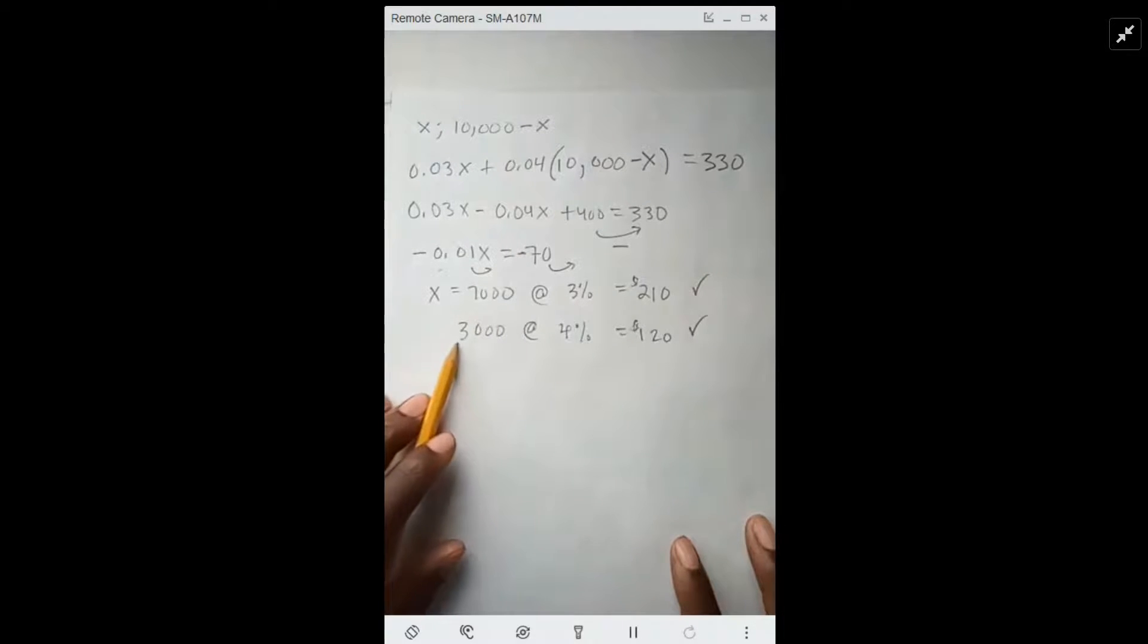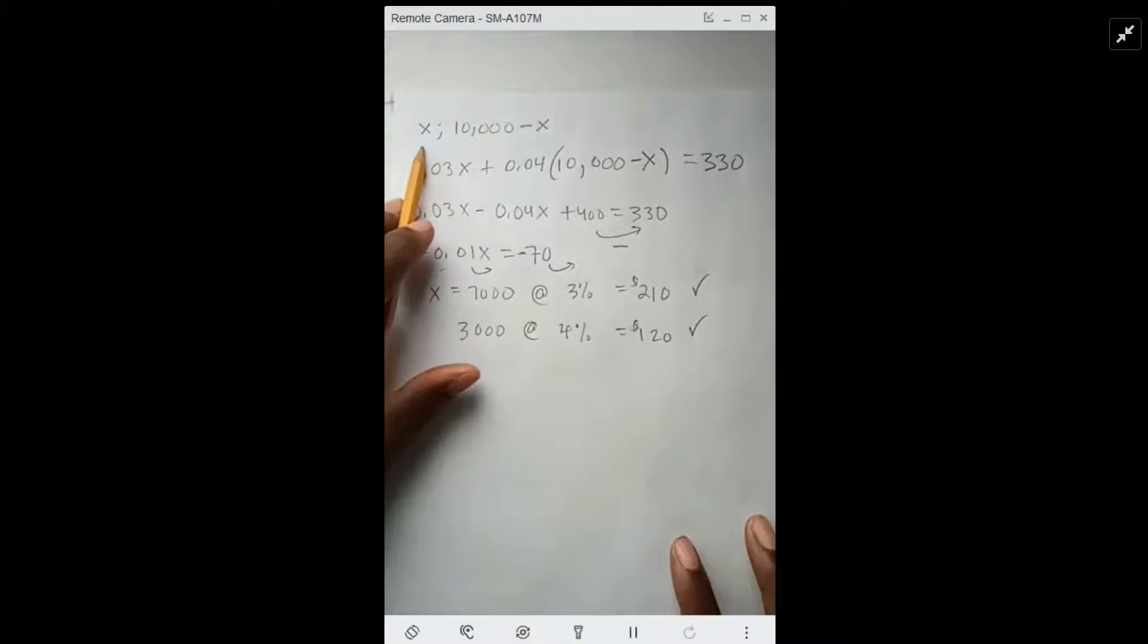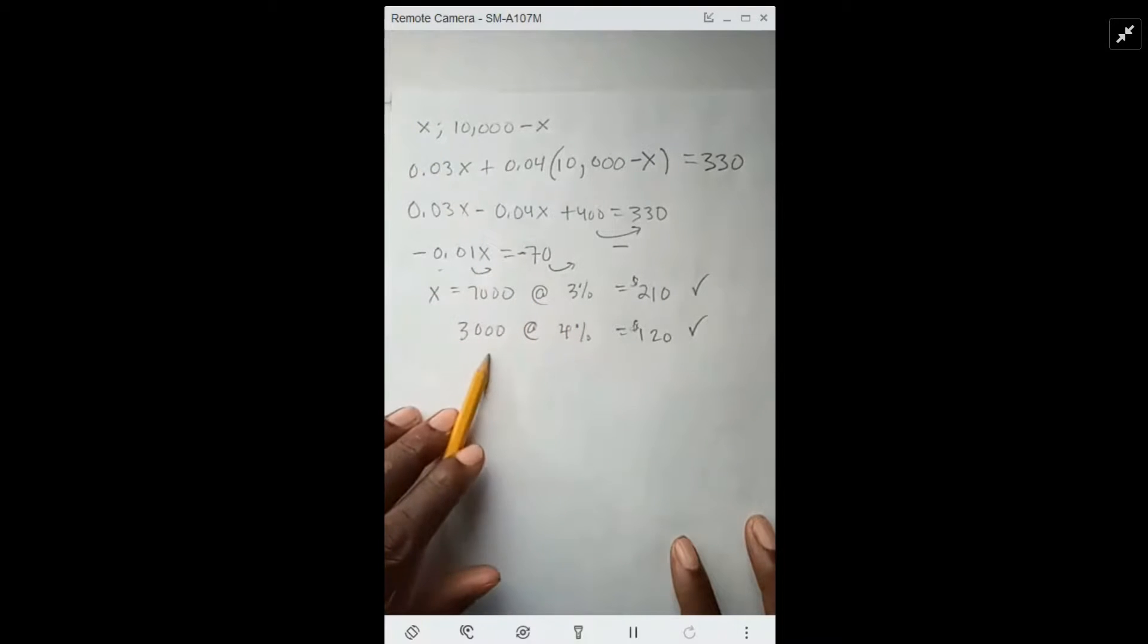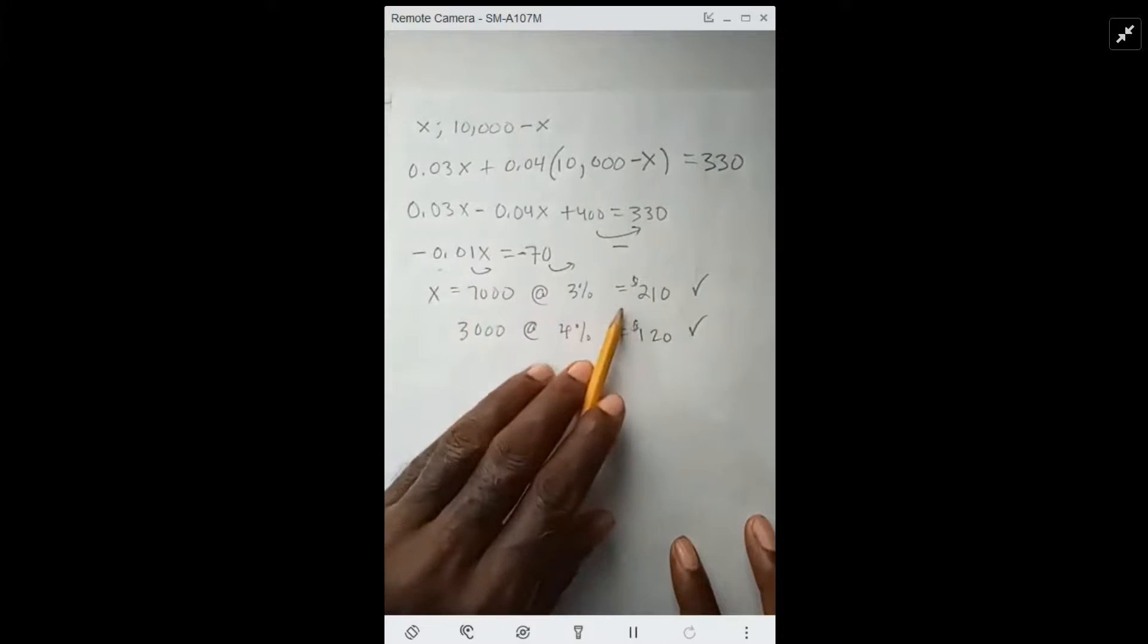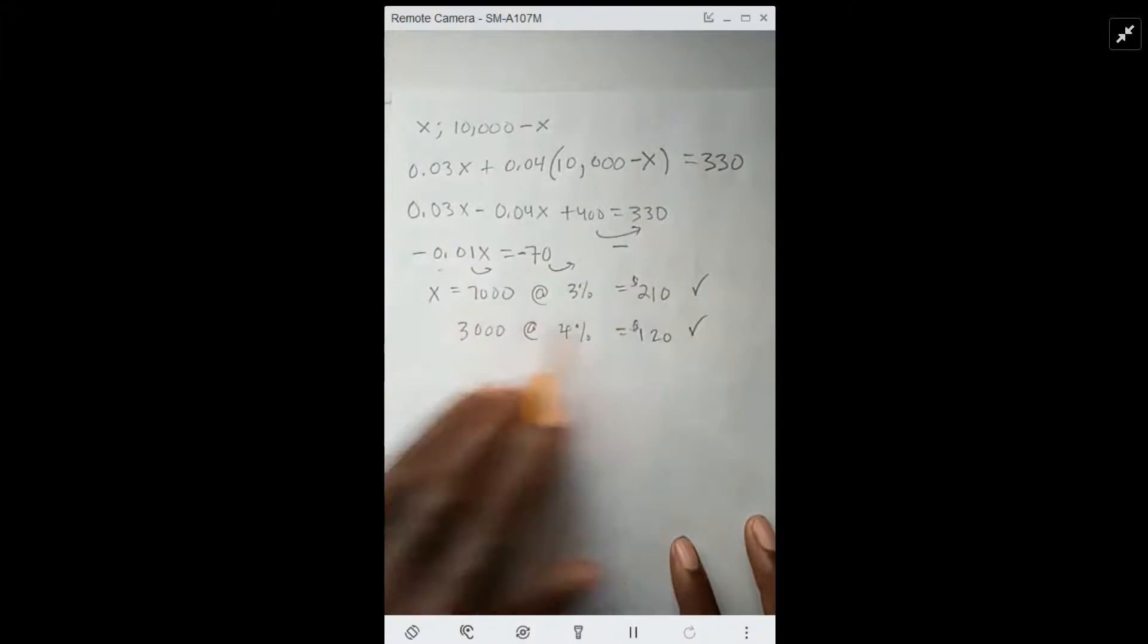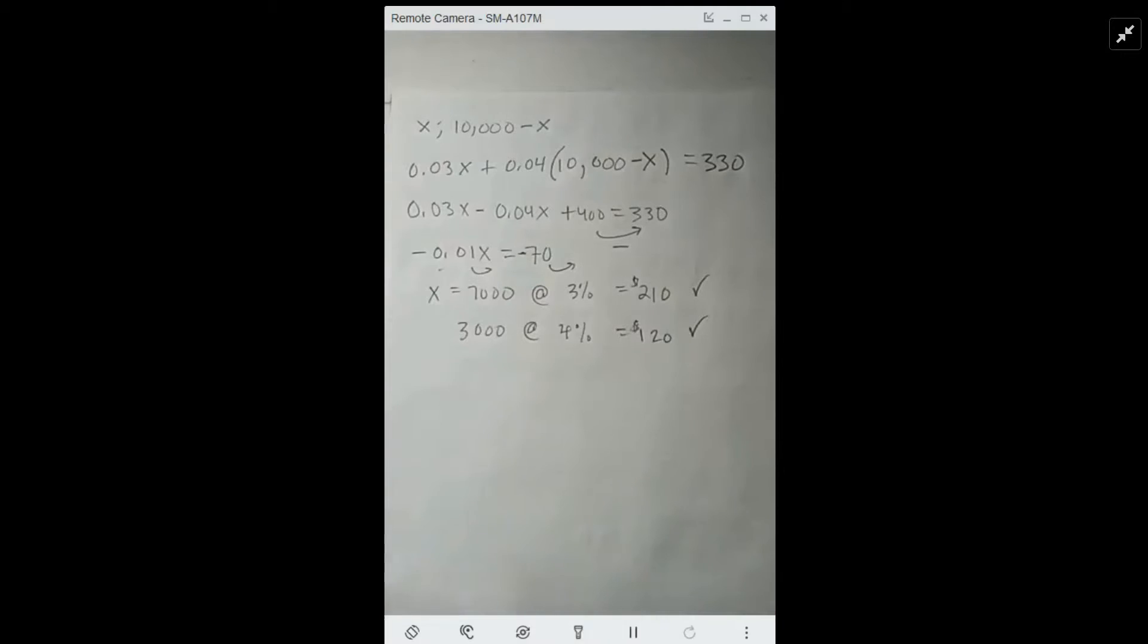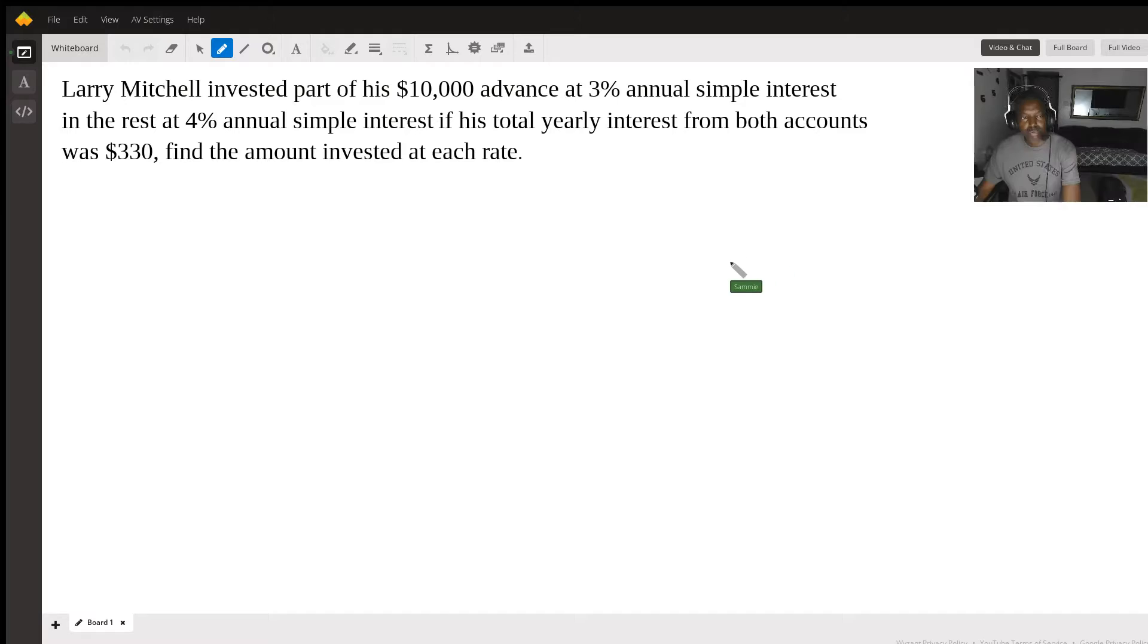And what's left over from 10,000 is going to be 3,000. So x, our first value, was invested at 3%, and the second value was invested at 4%. If you get these mixed up, all you have to do is multiply them out and you'll find that 0.03 times 7,000 gives you 210, and 0.04 times 3,000 gives you 120. That's your solution for the problem. Thank you very much.